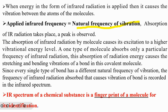The absorption of IR radiation by a molecule causes excitation in the vibrational energy level. Only one type of molecule absorbs a certain type of frequency of IR radiation. This absorption causes the stretching and bending vibration of a bond in the covalent molecule. Since every single type of bond has a different natural frequency, the IR spectrum of a chemical substance is a fingerprint of a molecule for its identification.